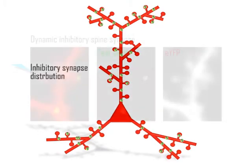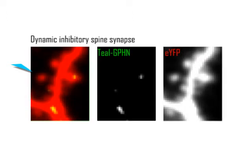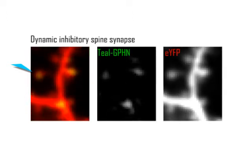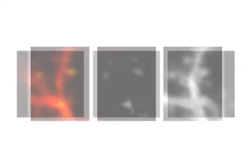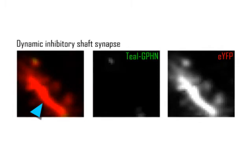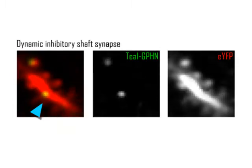These different inhibitory synapse types also differed in neurodynamics. During normal sensory experience, we found that inhibitory spine synapses were four times as dynamic as inhibitory shaft synapses.